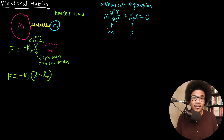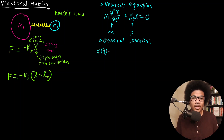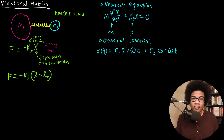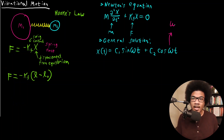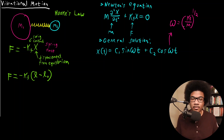This is a differential equation and it has a general solution. The general solution has the form: x(t) = c₁·sin(ωt) + c₂·cos(ωt), where ω is the angular frequency. The angular frequency ω is related to the spring constant and is defined as the square root of the spring constant kf divided by the mass — so ω = √(kf/m).